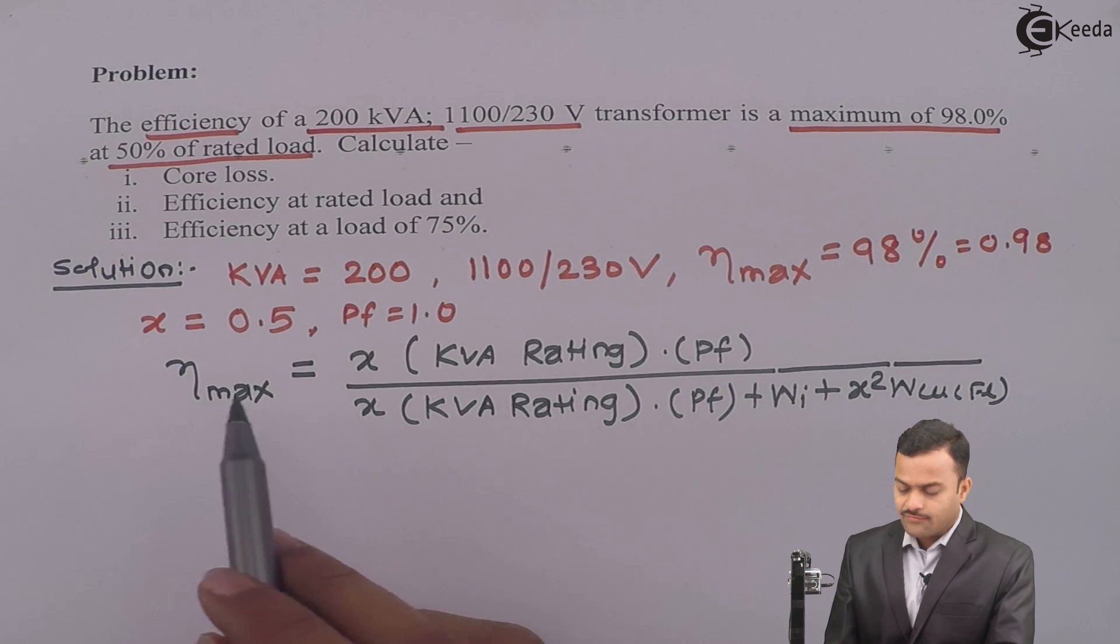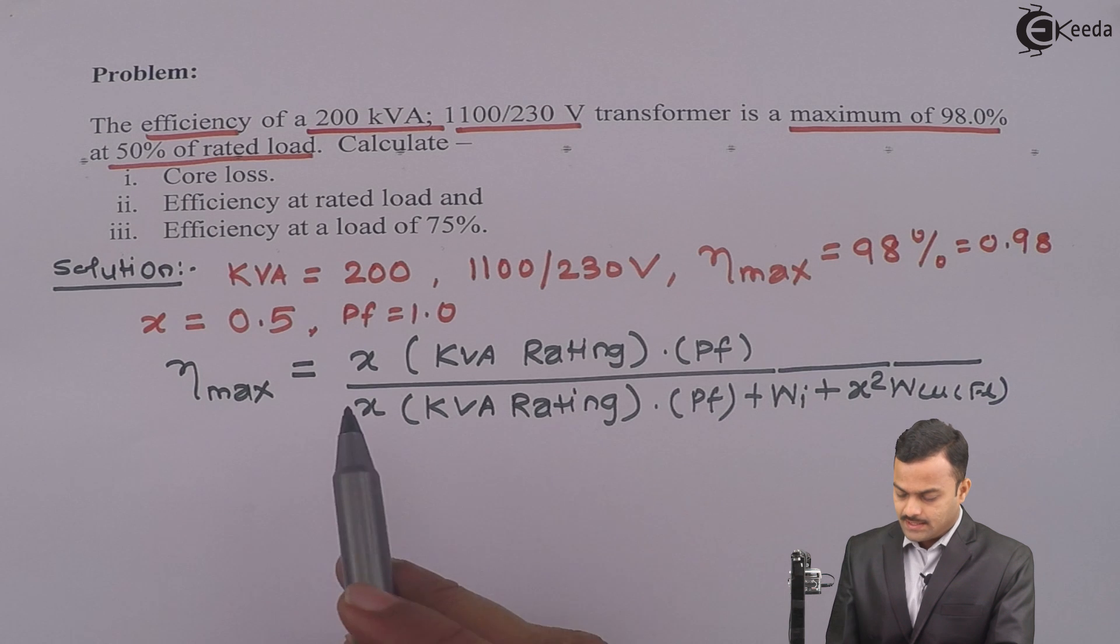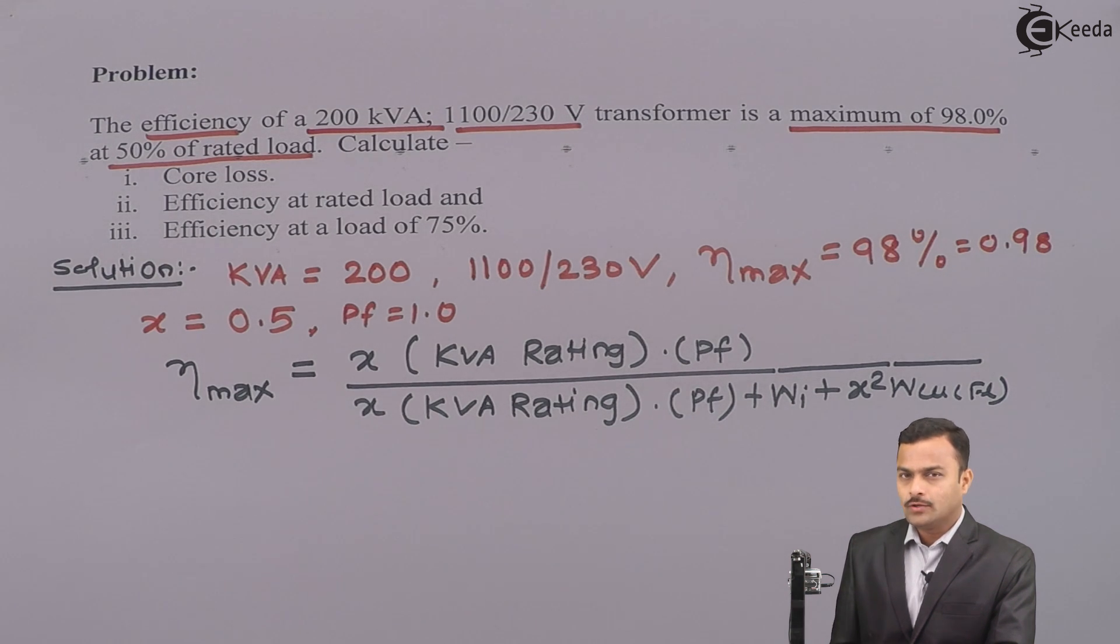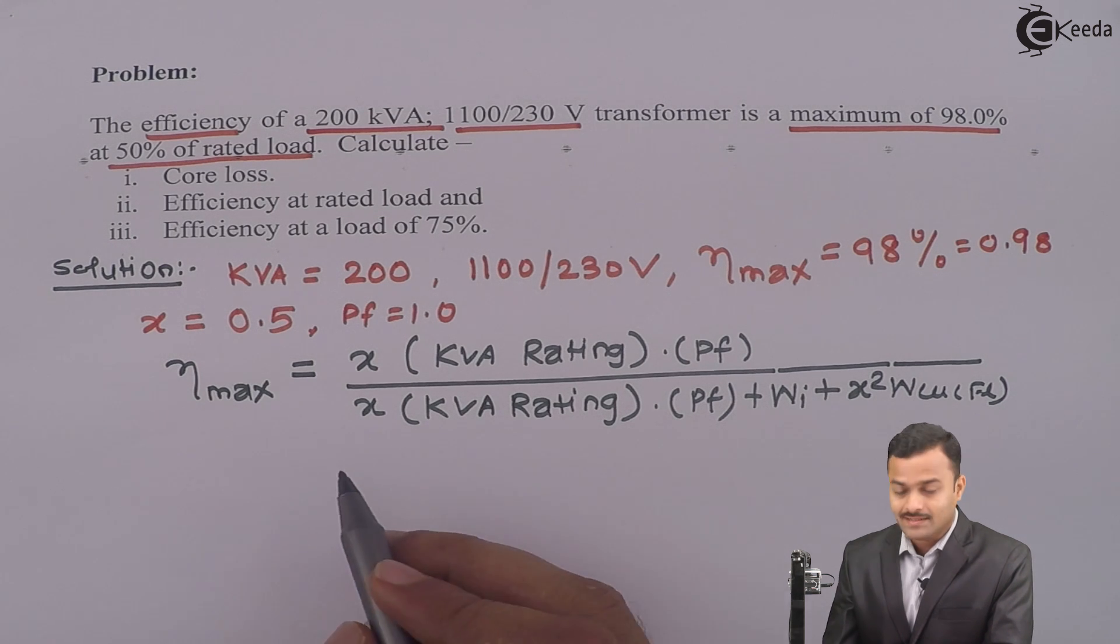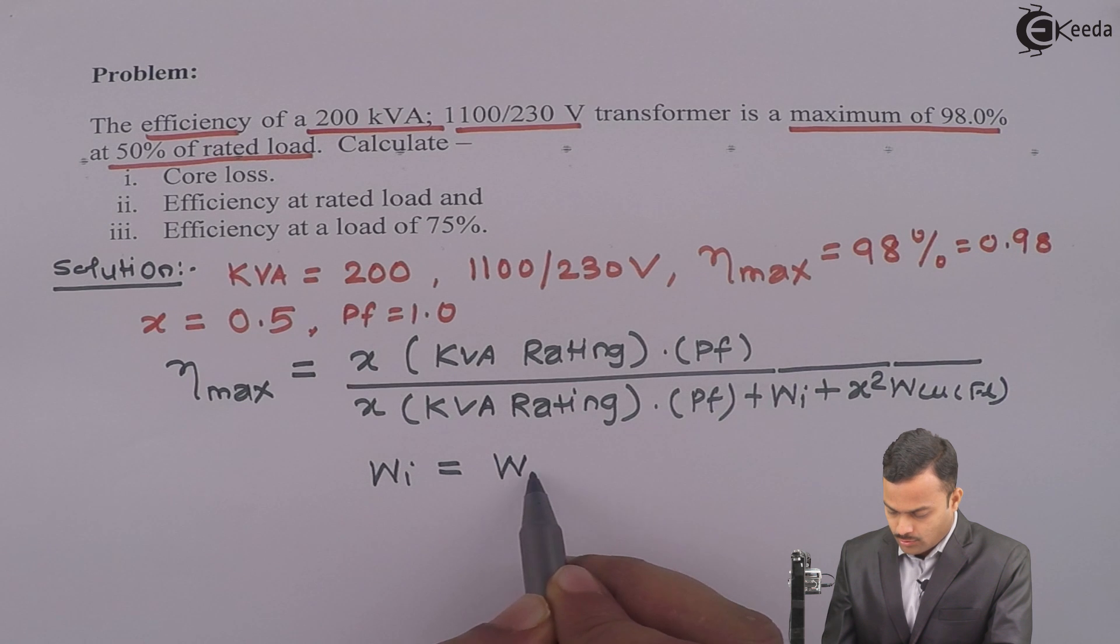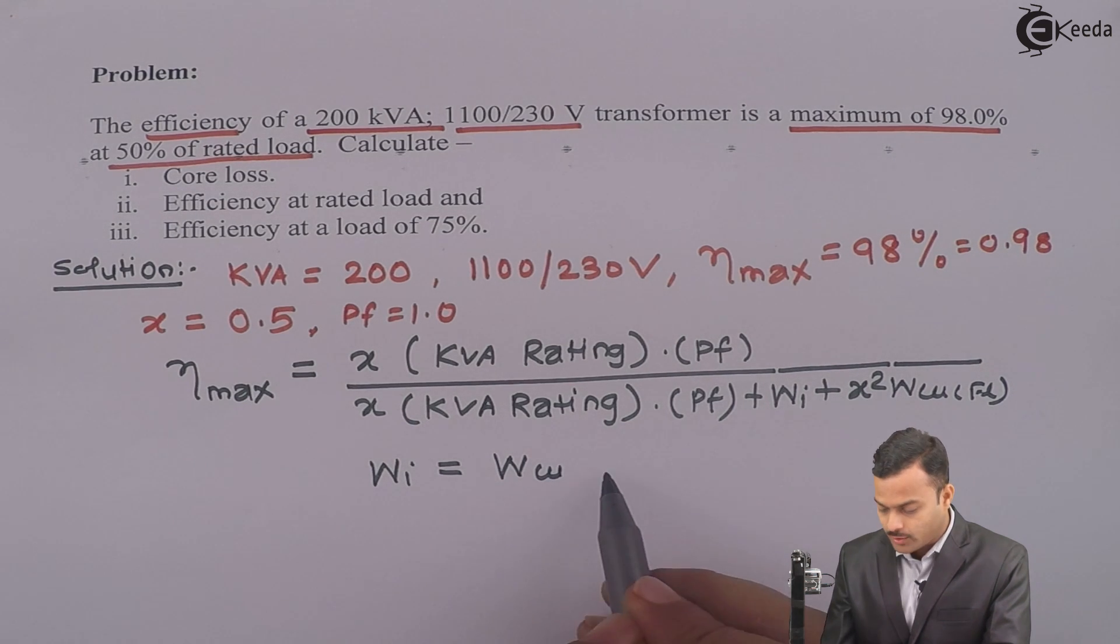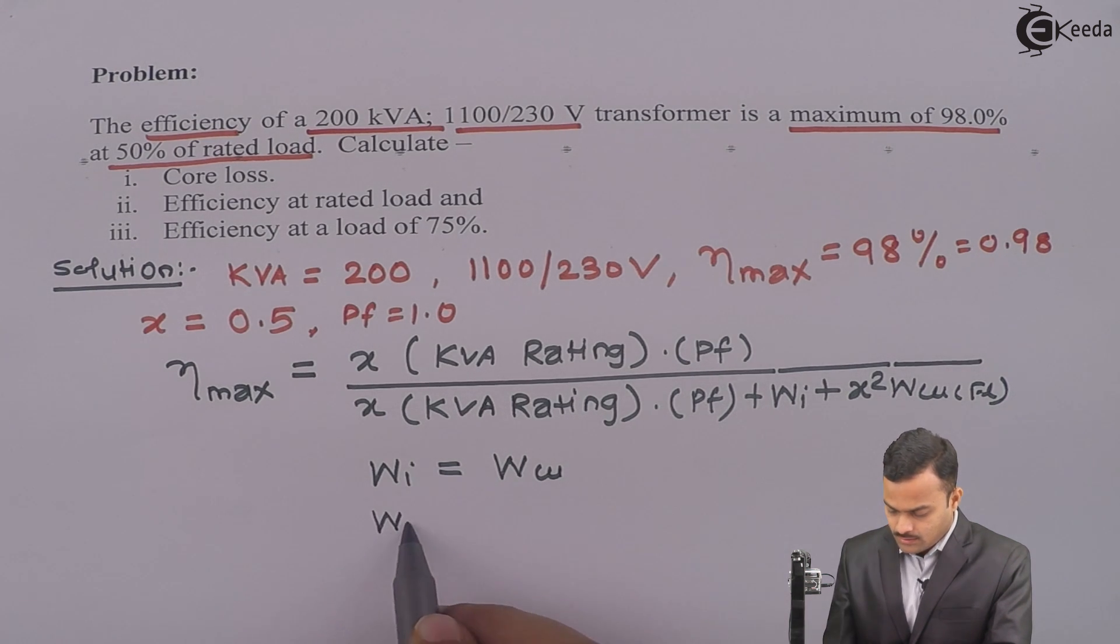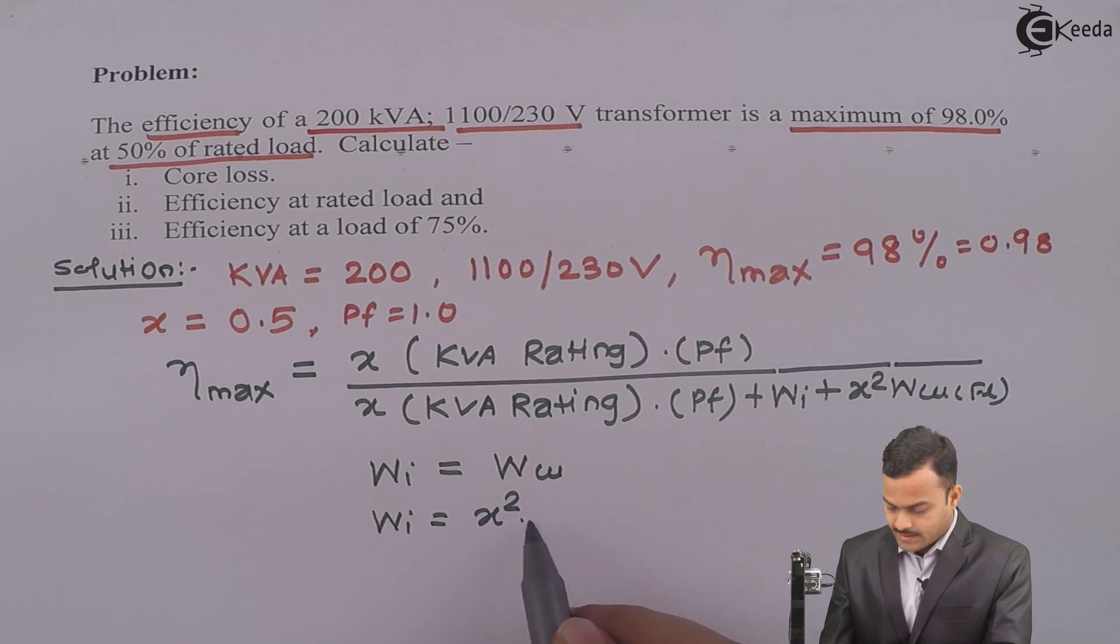Now, this is a formula for maximum efficiency provided X is nothing but that rated load at which efficiency is maximum. We have seen that condition for maximum efficiency of a transformer is this: Iron loss is same as copper loss. I am not saying copper loss at full load, I am just saying it is copper loss. So what happened at maximum efficiency? Iron loss is nothing but X square WCUFL.